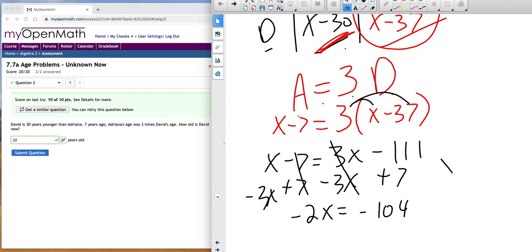And I get negative 2x equals negative 104. Doing the math, x equals negative 104 divided by negative 2. X equals 52.